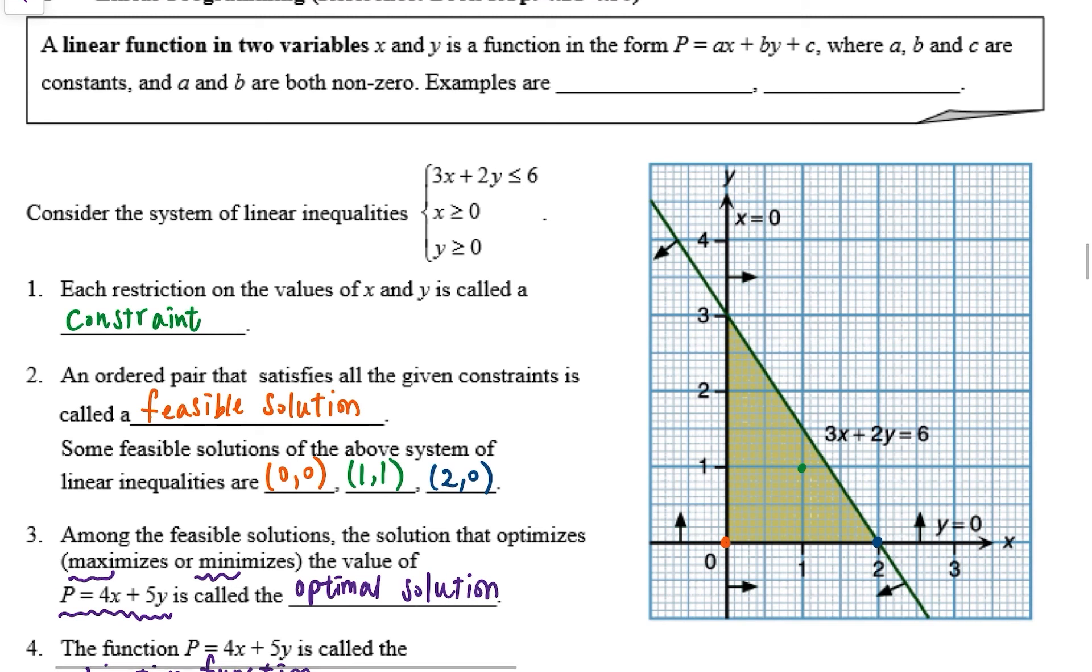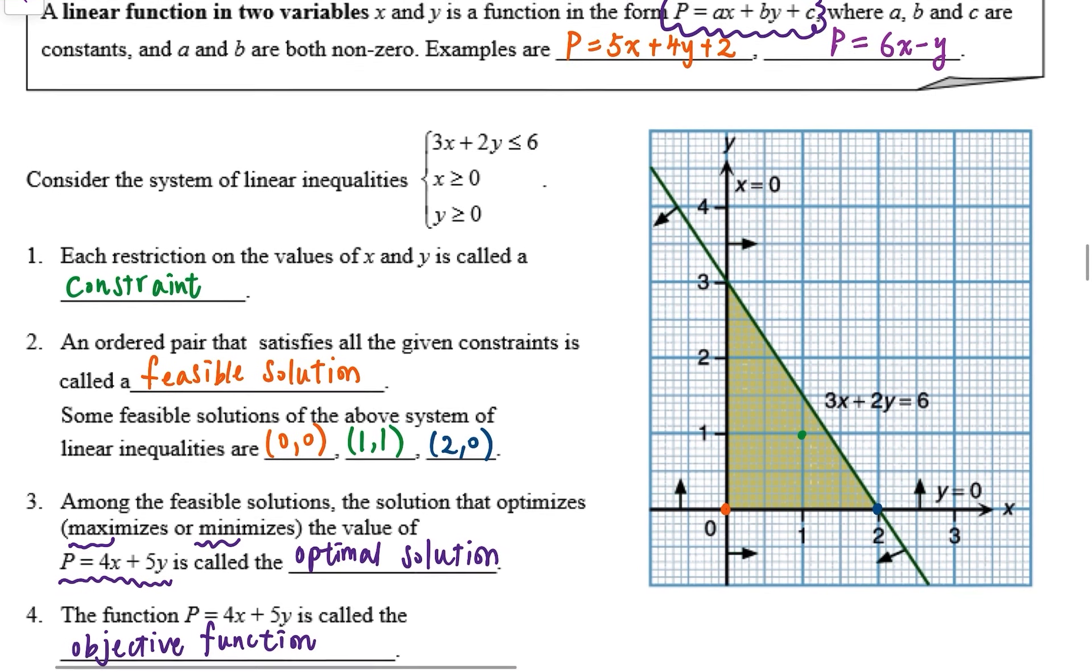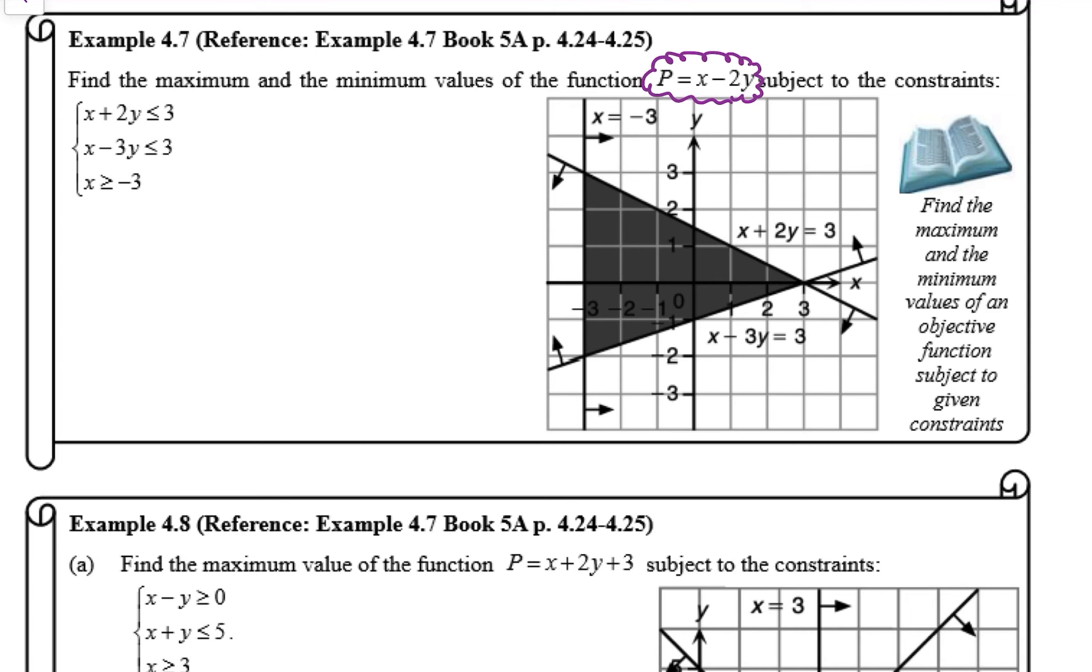So the objective function, usually in the form of P = ax + by + c. For some examples, we want to find the maximum and the minimum values of P.